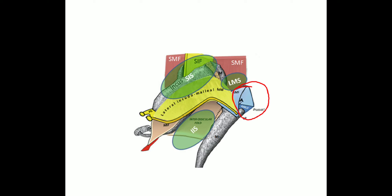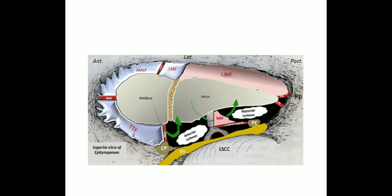From this diagram we can clearly appreciate the Prusak space. The roof of the Prusak space is formed by the lateral malleal fold, and the anterior limit is formed by the anterior malleal ligamental fold.